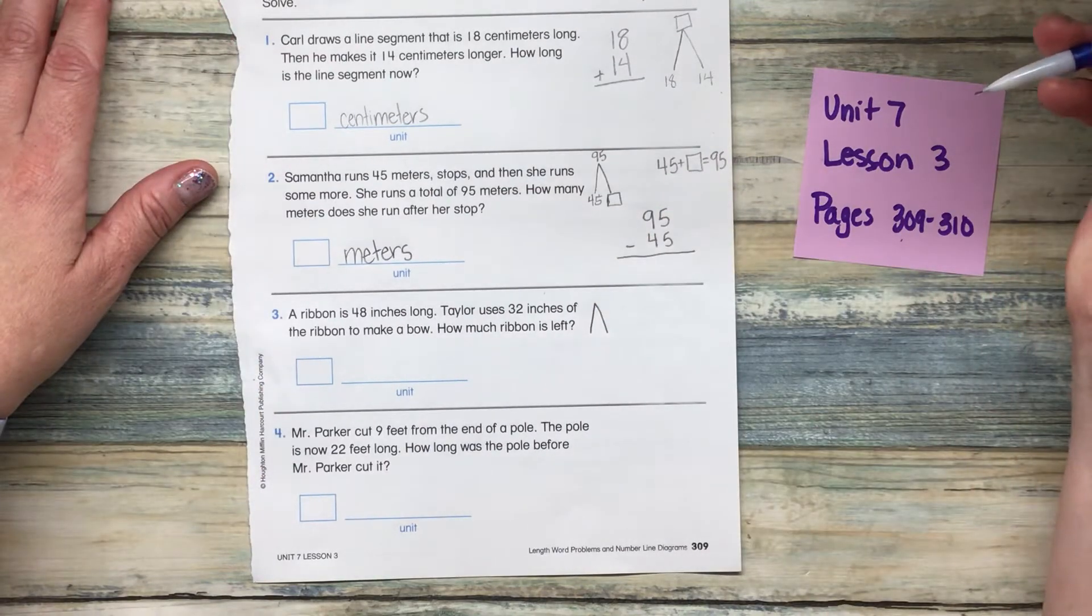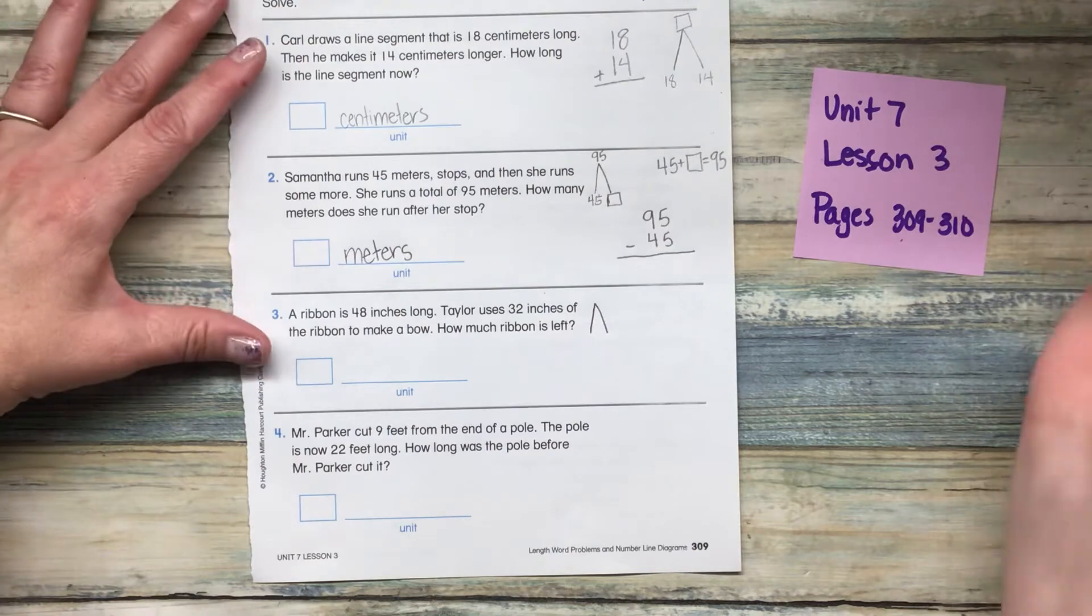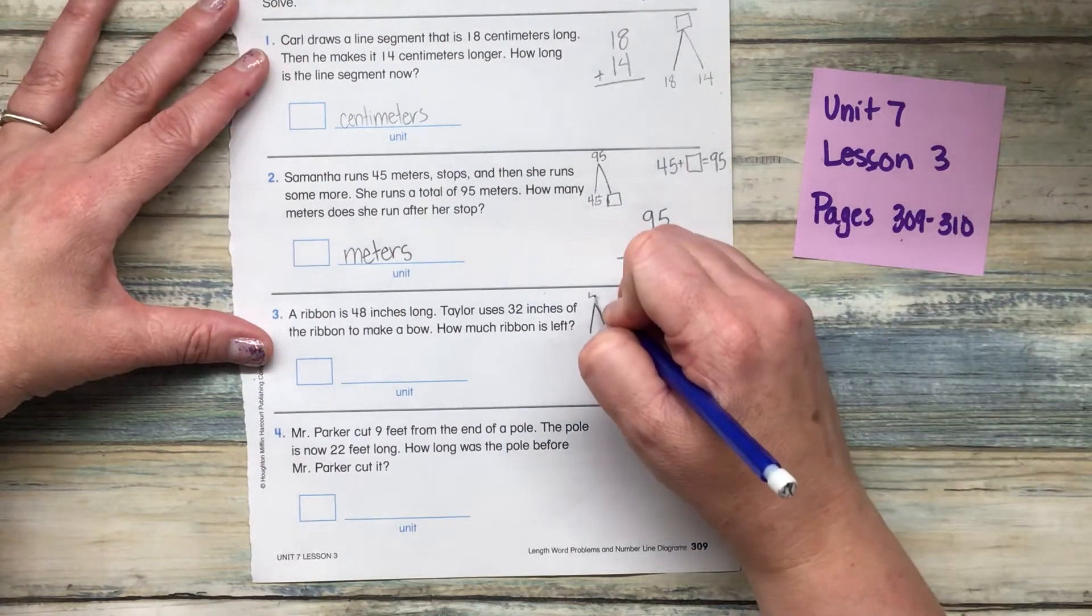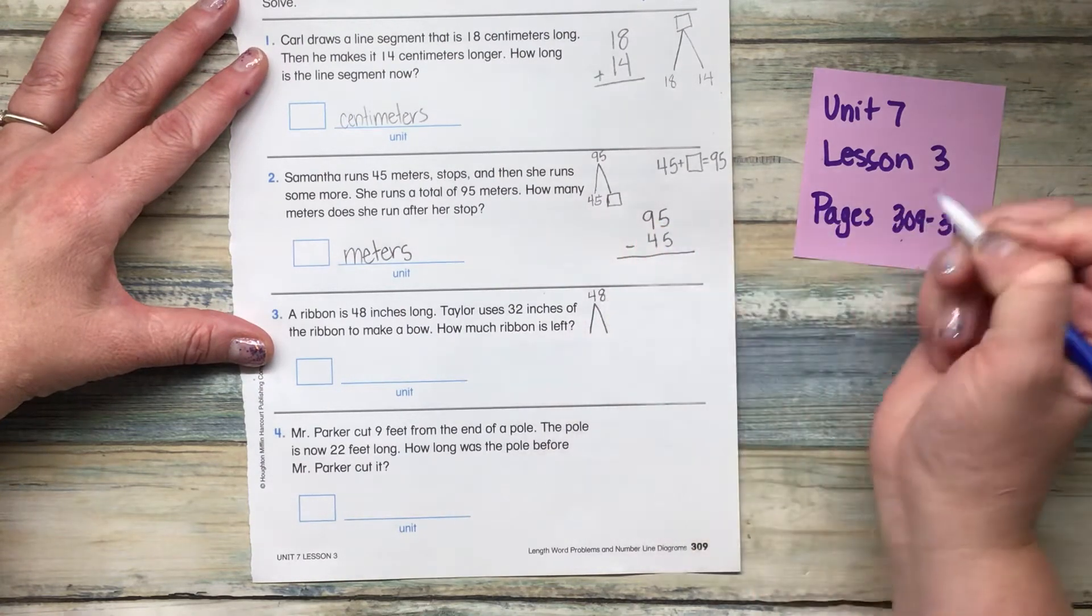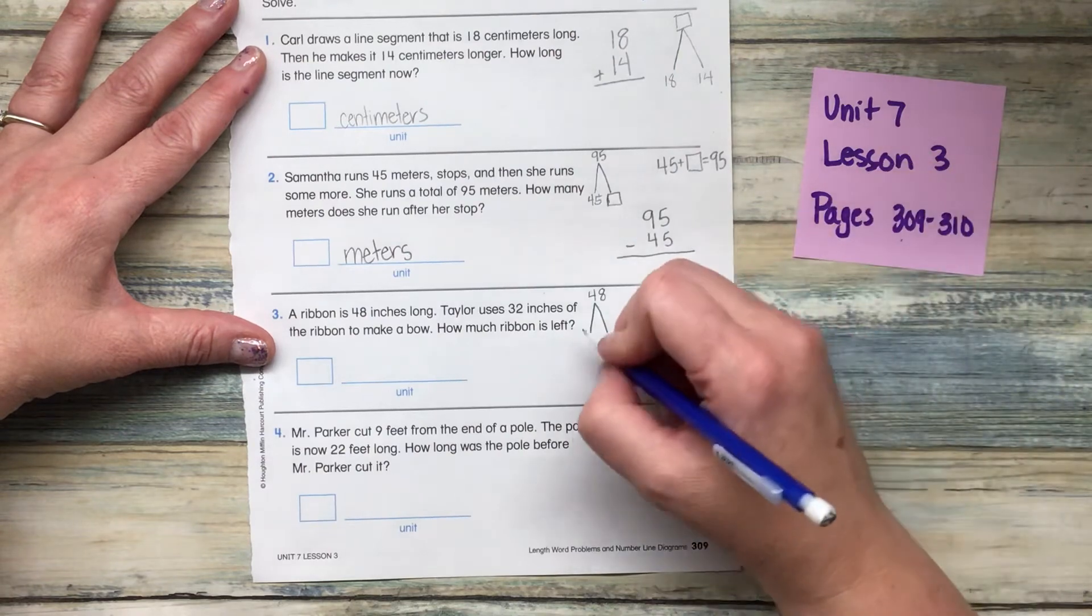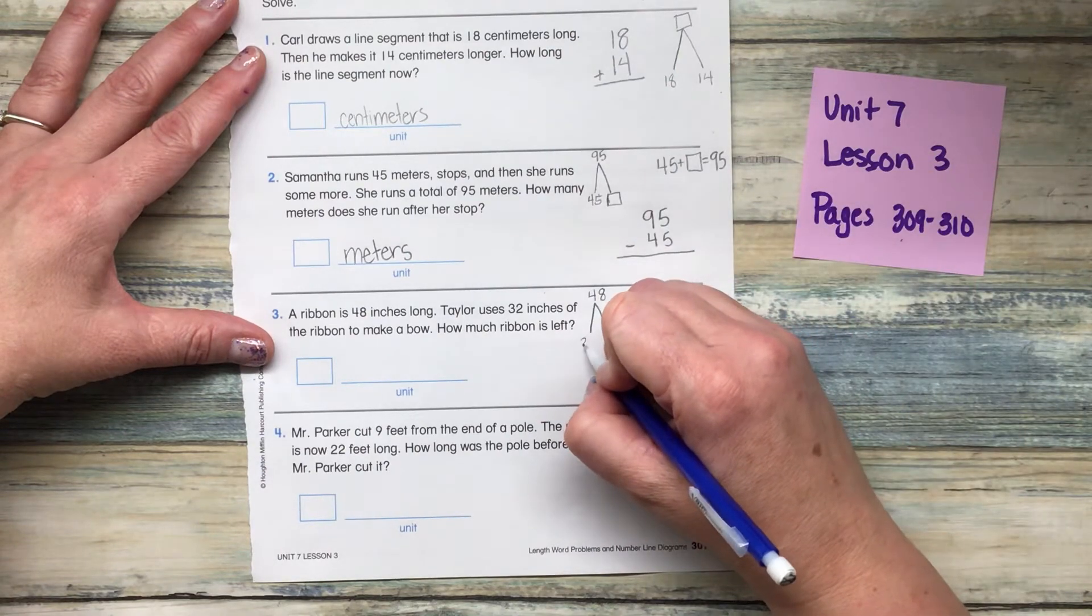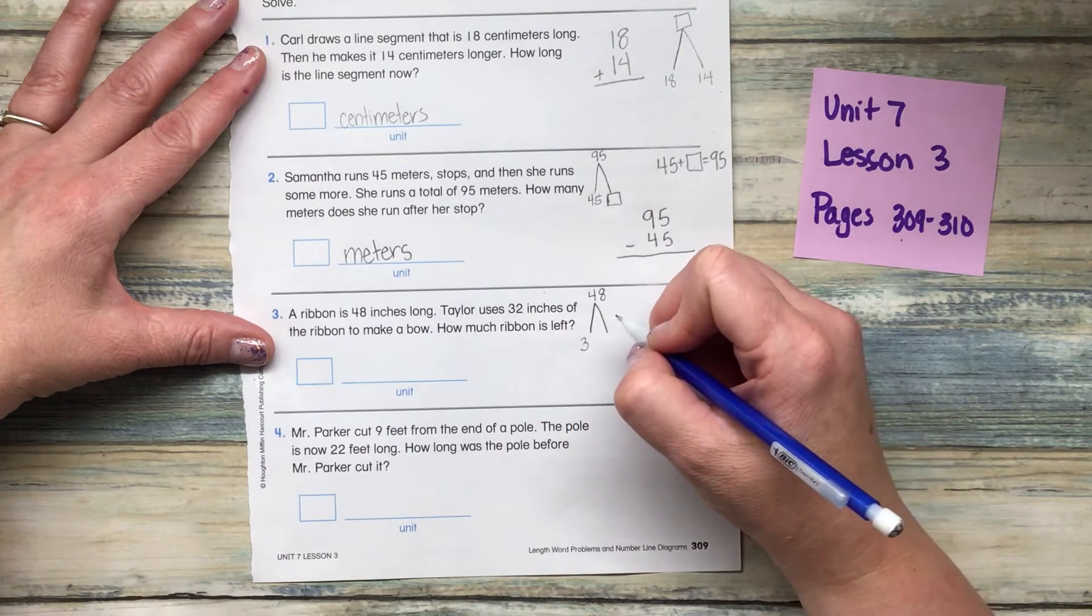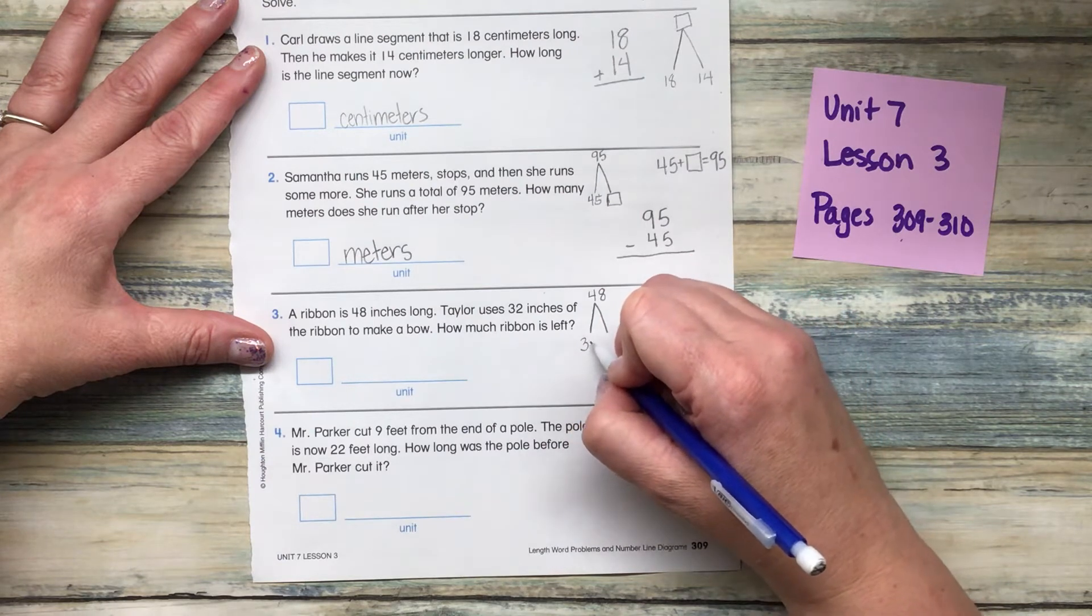So do we know our total? Yes, we do. We know our total is 48. That's what she starts with. Or he. And then they use 32 inches of it.